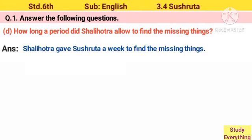D. How long did Salyotra allow to find the missing things? Answer: Salyotra gave Sushruta a week to find the missing things.